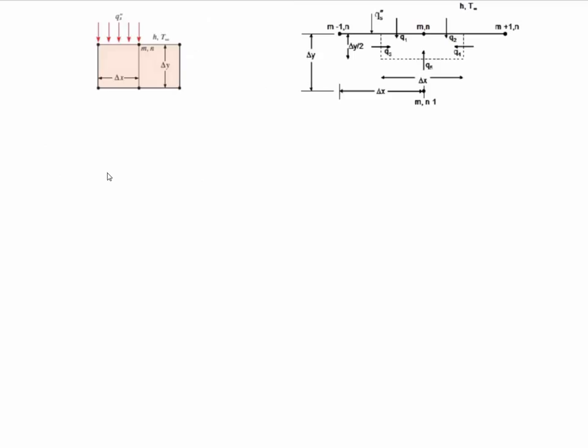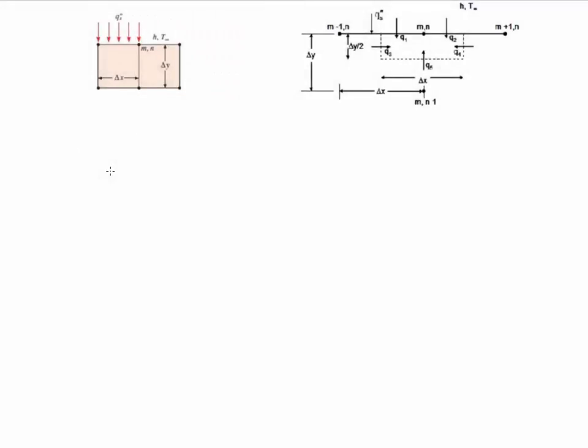We're going to do the analysis on the node MN. Notice that we have to the left side constant flux, to the right we have convection and the remaining are due to conduction.